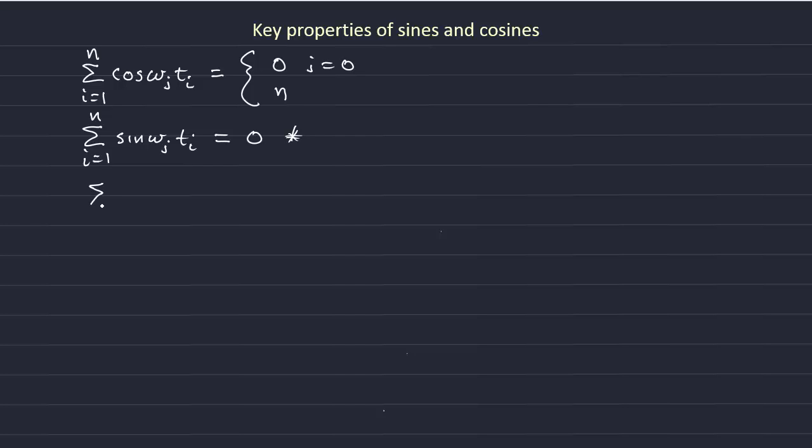Now let's consider the sum again over our whole data record of the product of cosine omega j t i times a cosine function with a different angular frequency, omega k t i.